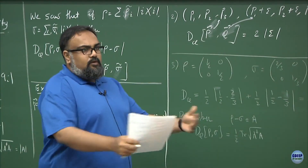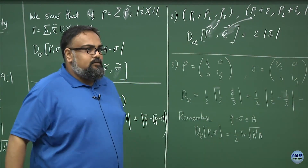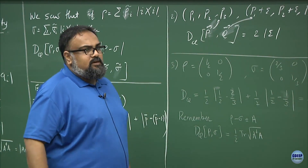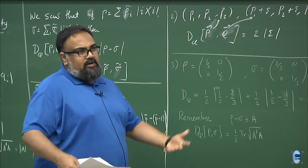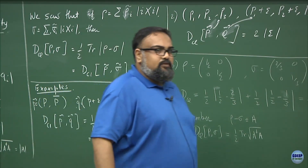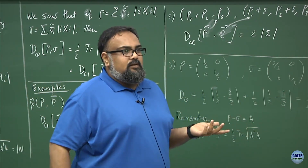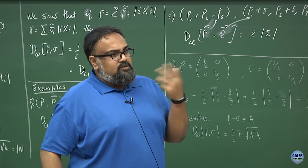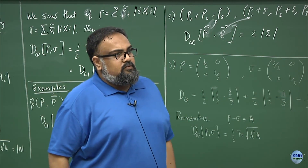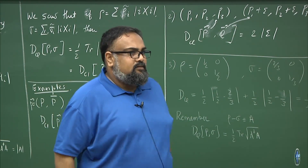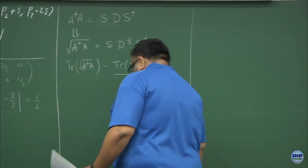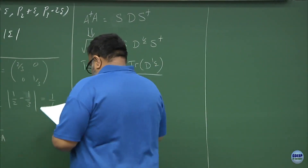The definition I wrote down — the way you would work through it if given a complicated-looking matrix — is: form A†A, diagonalize it (which is guaranteed to work because A†A is a normal matrix), take the square root of the eigenvalues, sum them, and divide by 2. If A has complex eigenvalues, they appear as complex conjugate pairs in A†A, giving modulus-squared eigenvalues. Also note: the definition of the quantum trace distance has the factor of one half.